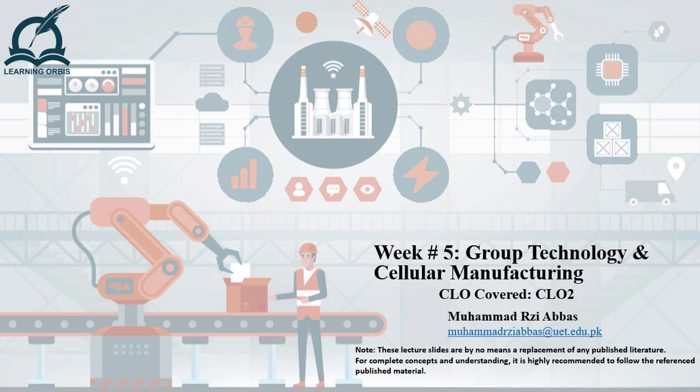Dear learners, I hope you are fine and doing great. In the previous lecture, I discussed in detail a type of manufacturing system called automated lines. There are three types of manufacturing systems normally employed in an industry: the first is a single station cell, the second is automated lines or multi-station cells with fixed routing, and the last is multi-station cells with variable routing.